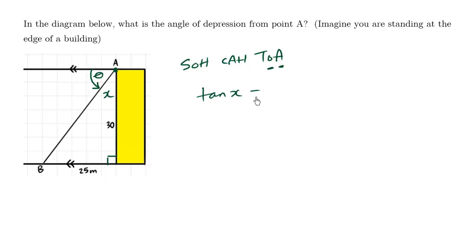Tan X equals the opposite over the adjacent. So tan X equals the opposite which is 25 over the adjacent which is 30.